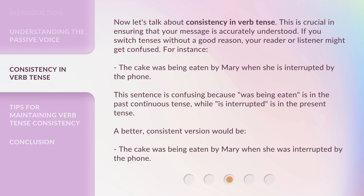For instance, consider this sentence: 'The cake was being eaten by Mary when she is interrupted by the phone.' This sentence is confusing because 'was being eaten' is in the past continuous tense, while 'is interrupted' is in the present tense. A better, consistent version would be: 'The cake was being eaten by Mary when she was interrupted by the phone.'